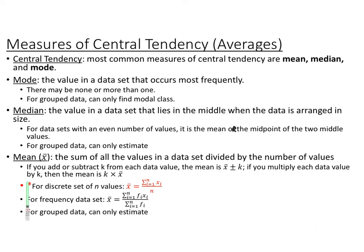This star means it's on your formula booklet. For discrete values of n, the formal math definition of the mean says: sum all your data values from 1 to n, add them all up, and divide by n.